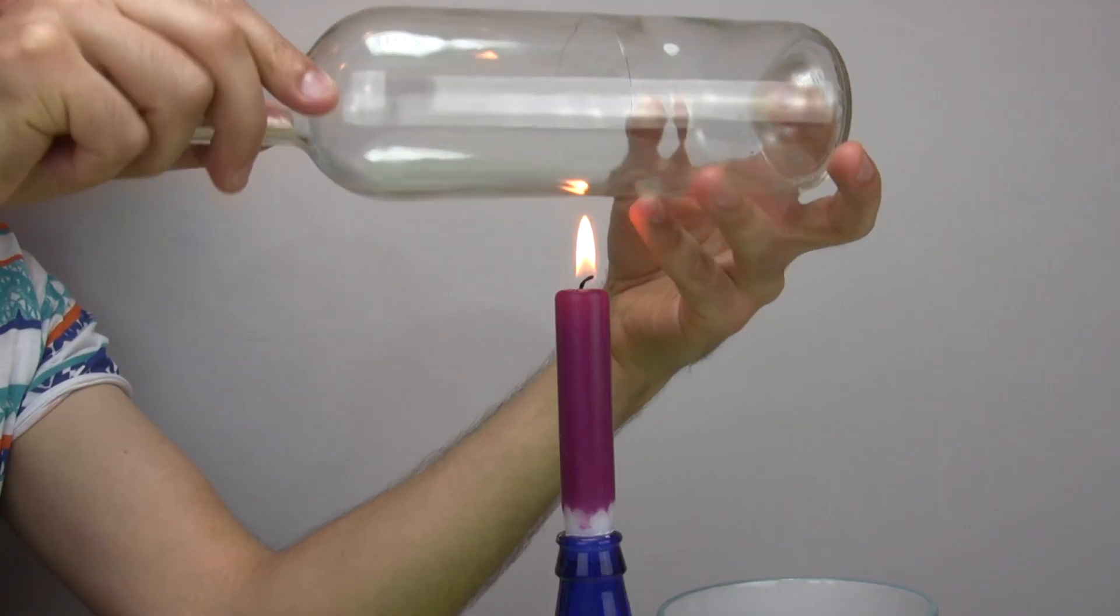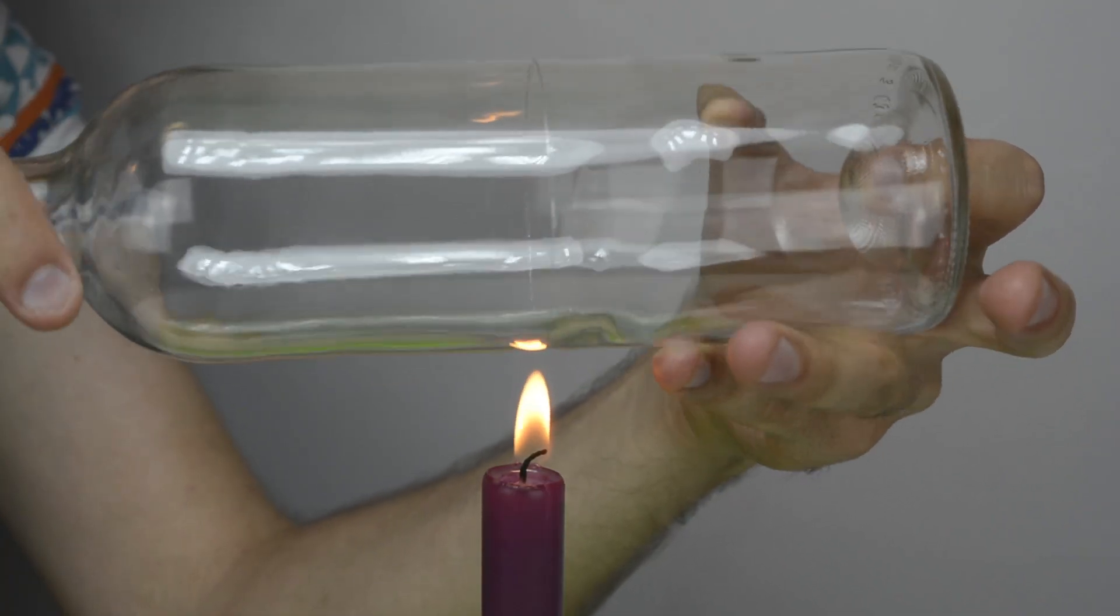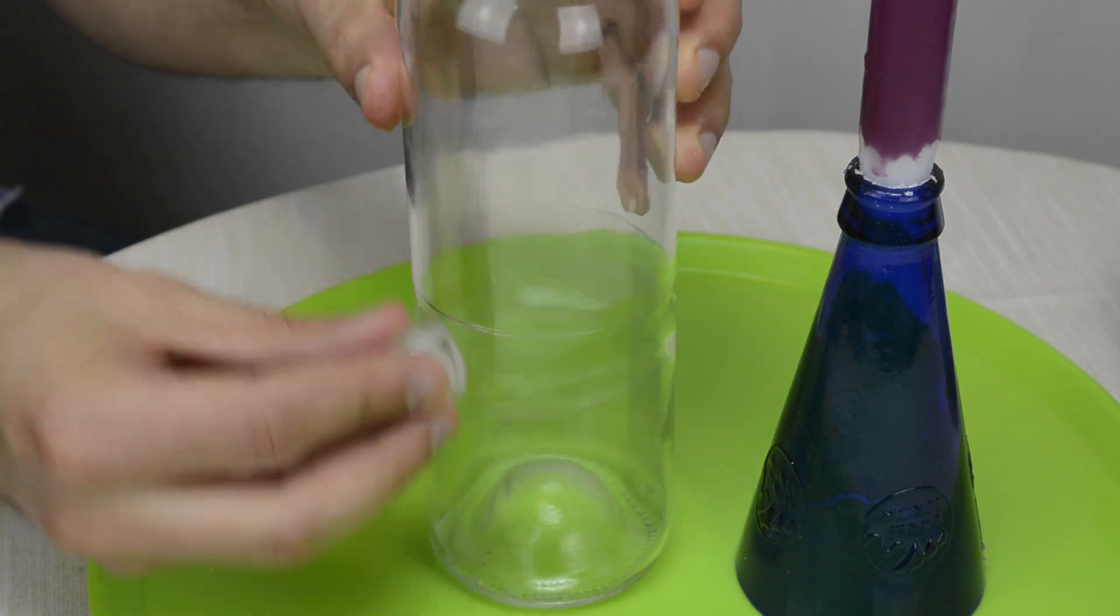When the line has been scored, separate the bottle by heating and cooling. In my case, I do it with a candle and ice.